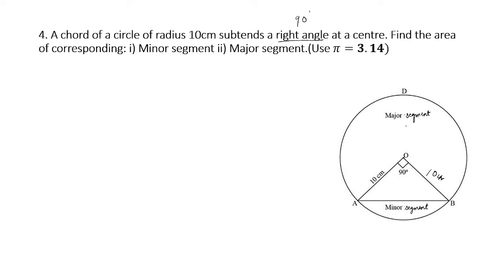This diagram will not be given in the exam, but you'll have to be able to draw it. First, draw a circle of radius 10 cm. The next thing is to draw a chord — a line that does not begin at the center. AB is the chord in the case of this diagram.